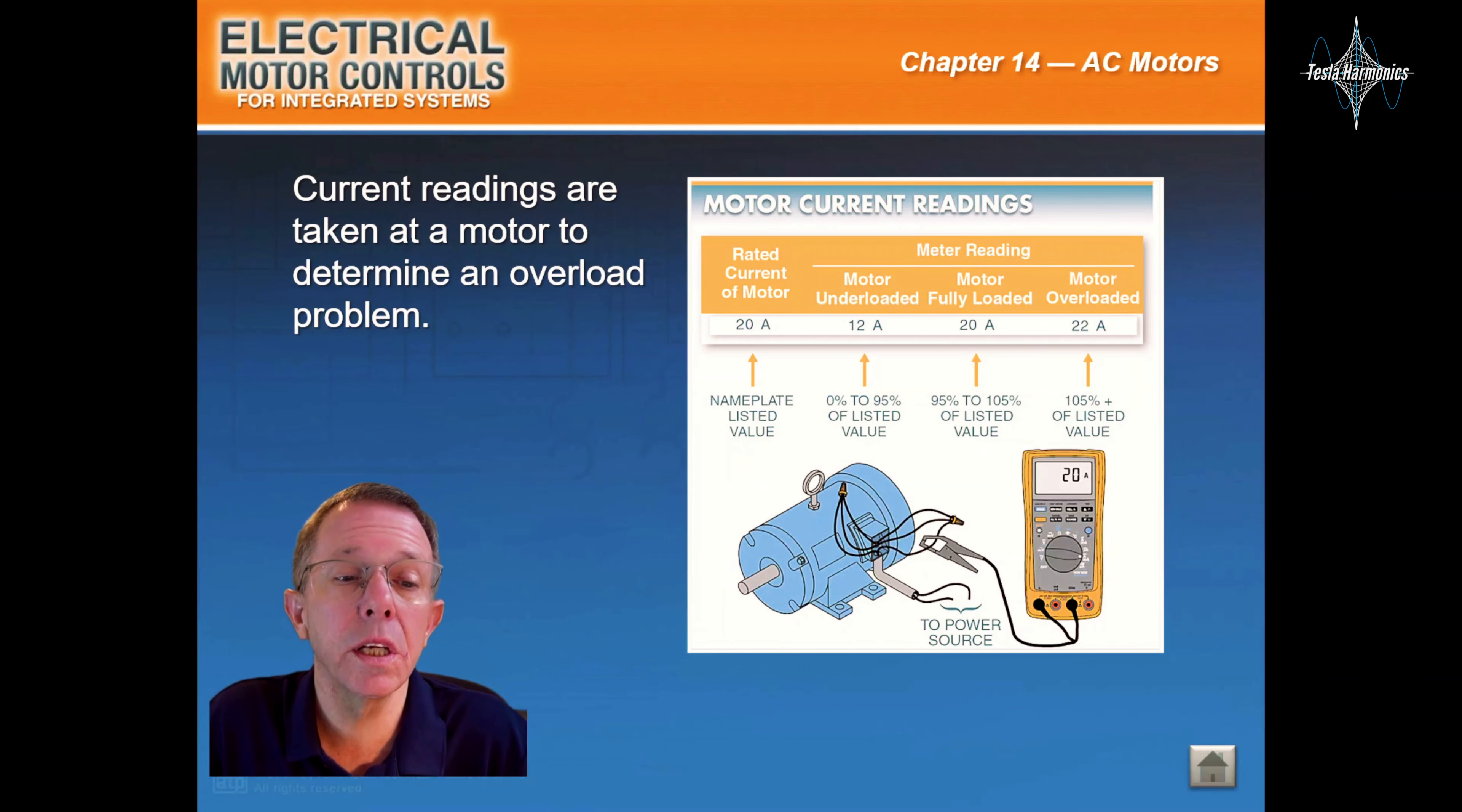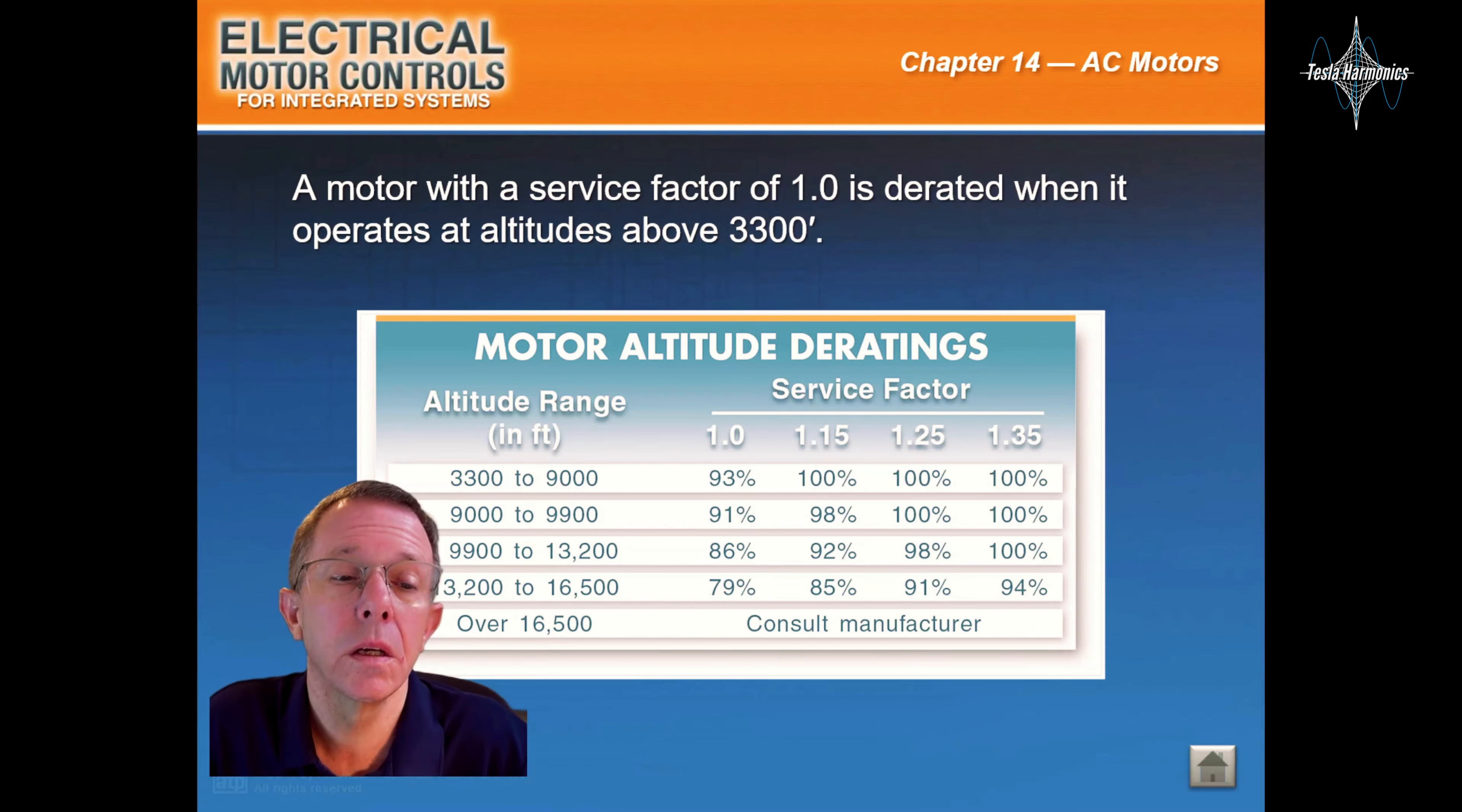Current readings are taken at a motor to determine an overload problem. A motor with a service factor of 1.0 is derated when it operates at altitudes above 3,300 feet.